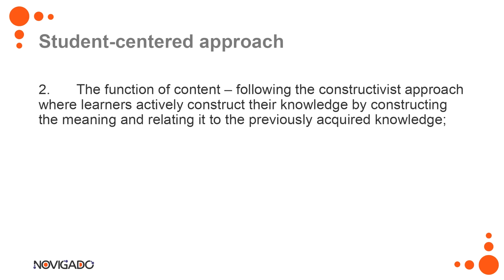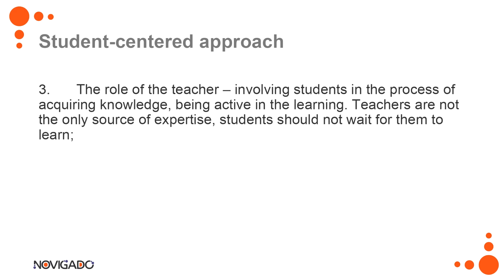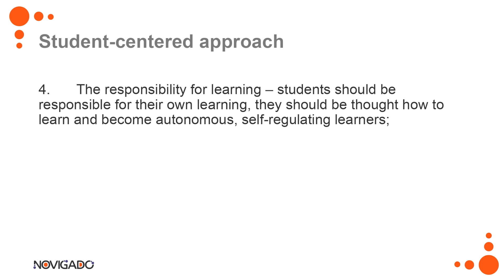The second key change is the function of content. Skills are more important than the knowledge itself, and following the constructivist approach, learners actively construct their knowledge by making meaning linked to previously acquired knowledge. The role of teacher as a facilitator, not the only source of expertise, and the responsibility of learning being put to the students — student agency is very important here. Having that ownership, being autonomous and self-regulated as a learner, being in charge of your learning and taking responsibility — this is all very important in active learning.